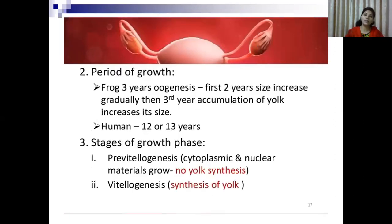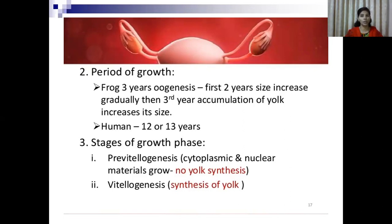So what actually happens during this period of growth? Two important phases occur: pre-vitellogenesis and vitellogenesis. Pre-vitellogenesis is the phase where yolk is not yet synthesized — this phase occurs before yolk synthesis, and only cytoplasmic and nuclear materials start to grow inside. Then in the second phase, vitellogenesis, the synthesis of yolk actually takes place. So during the growth phase, both pre-vitellogenesis and vitellogenesis occur.